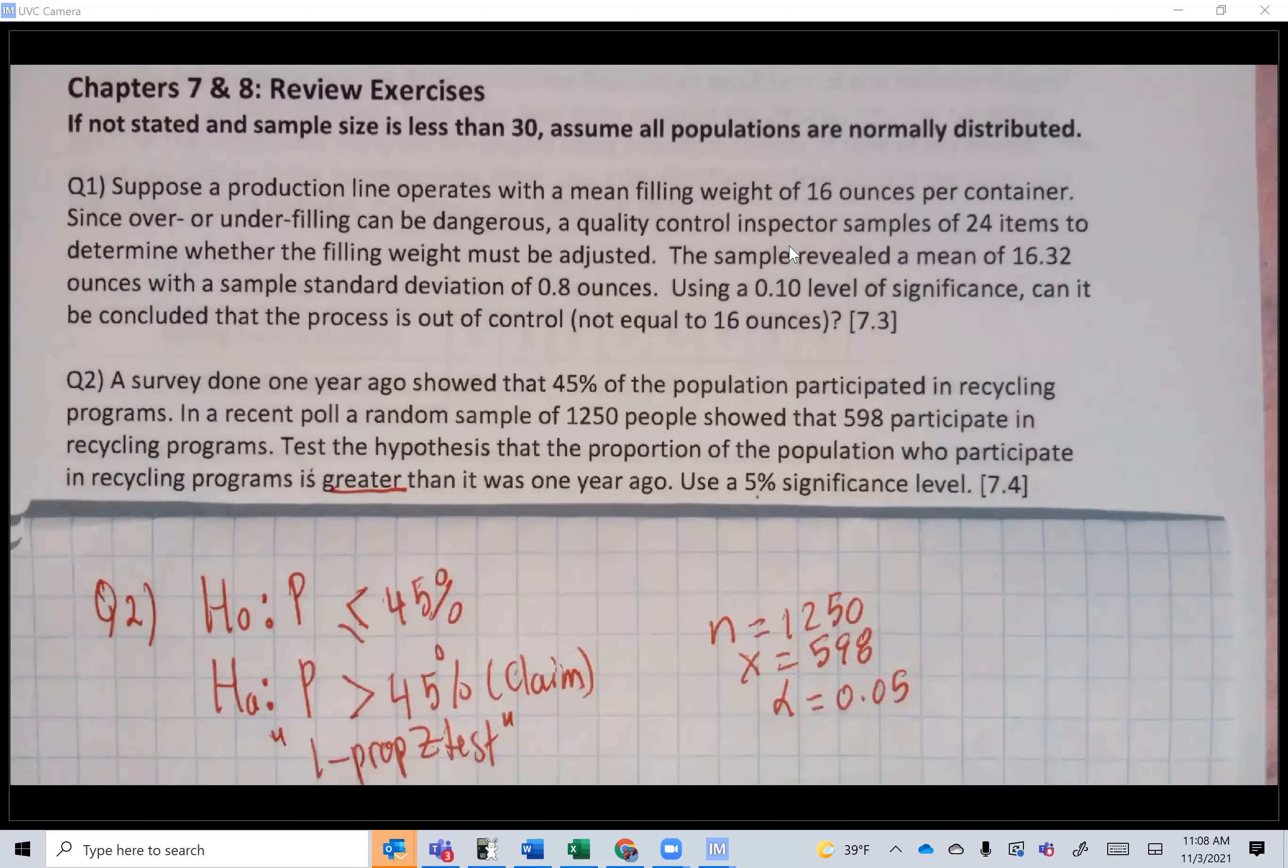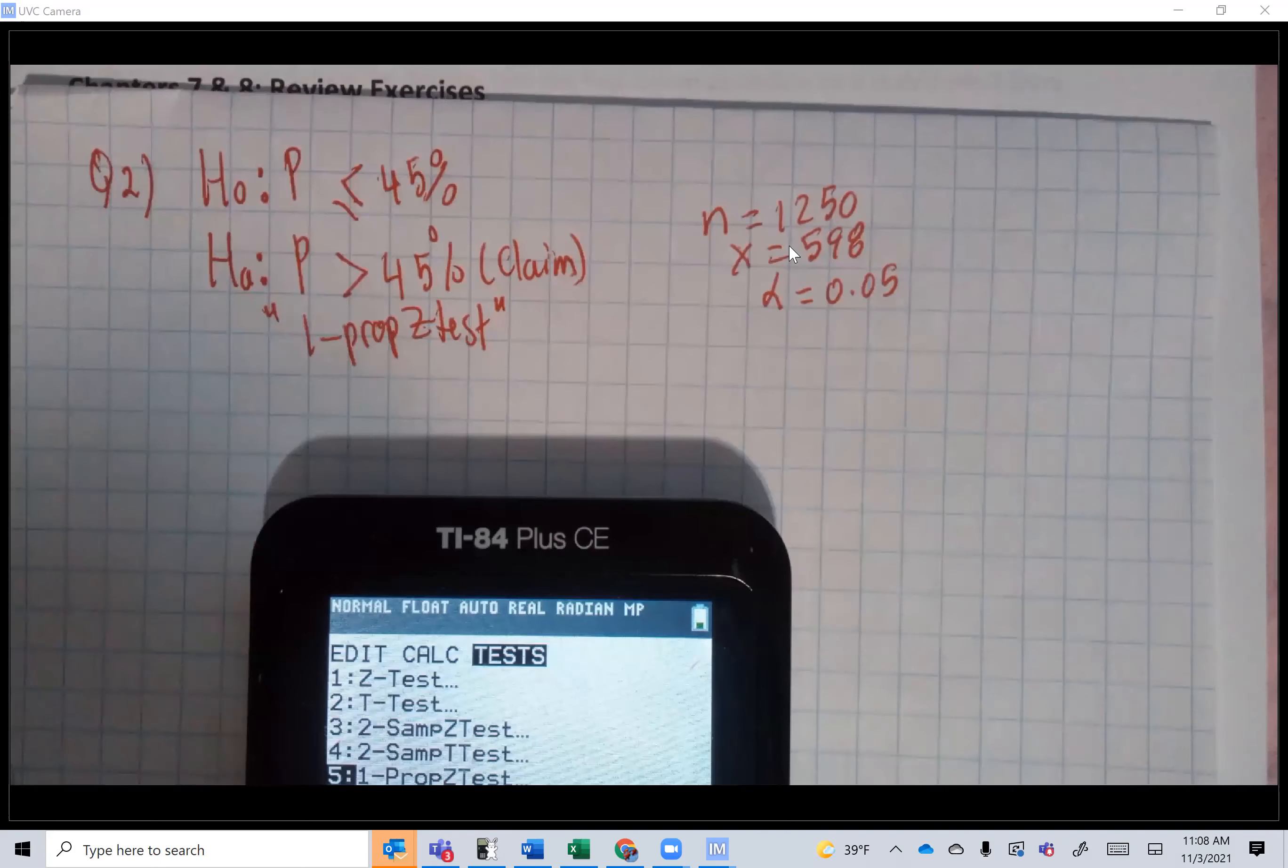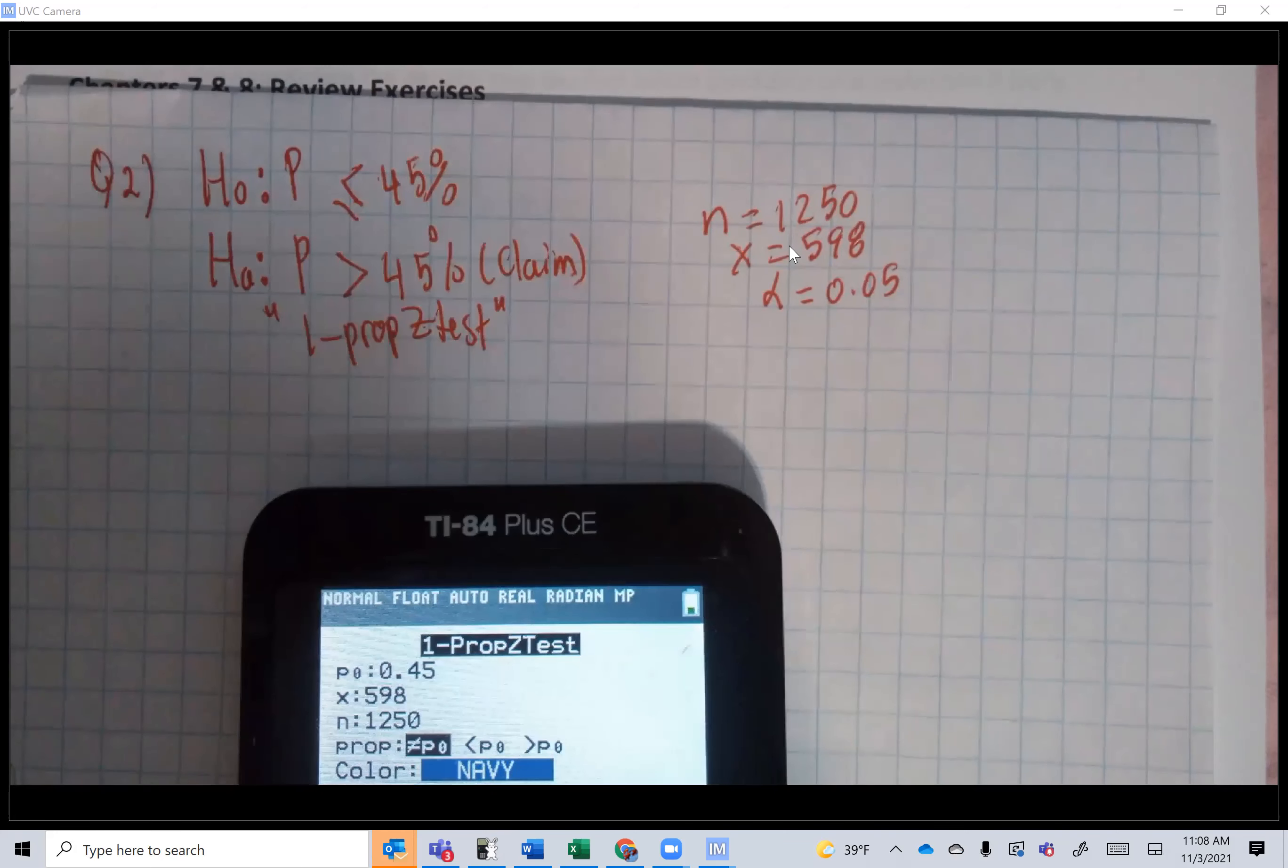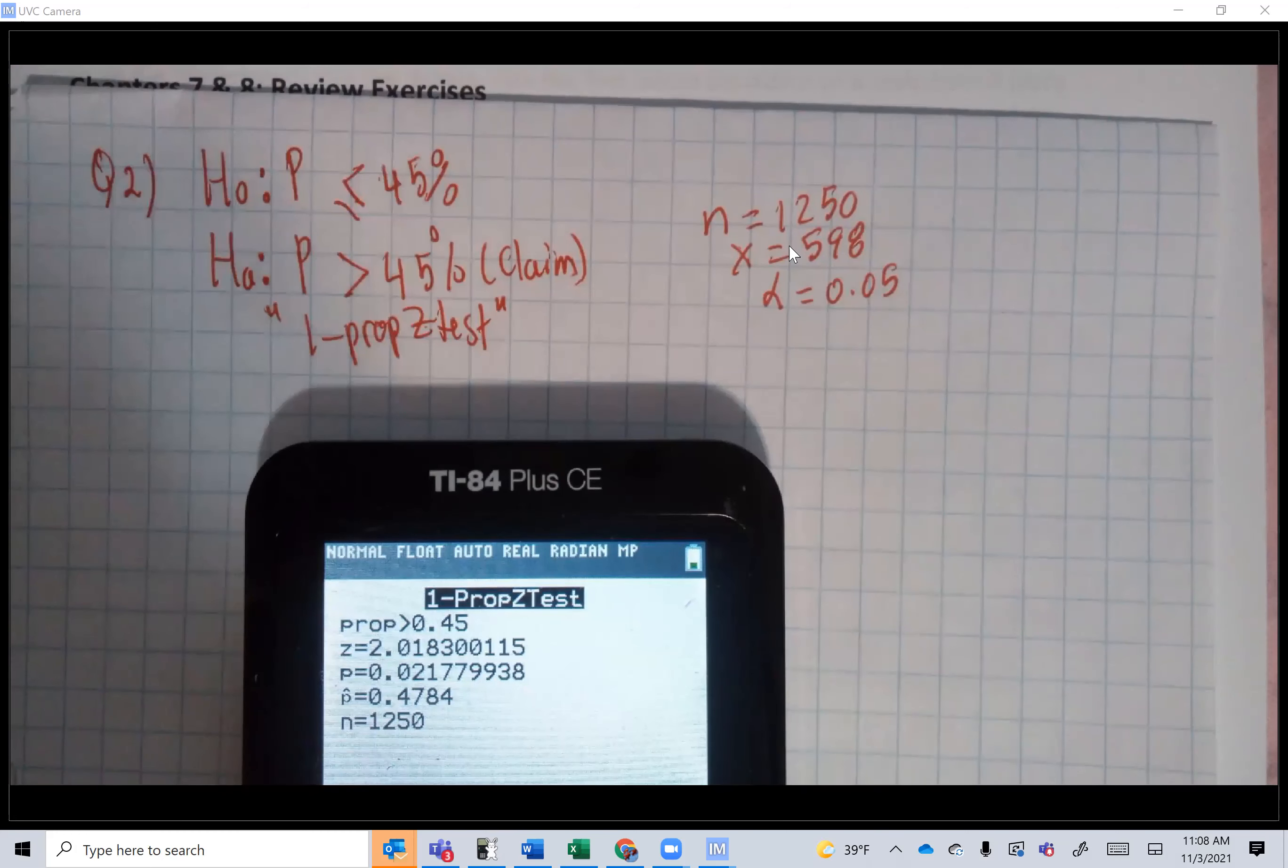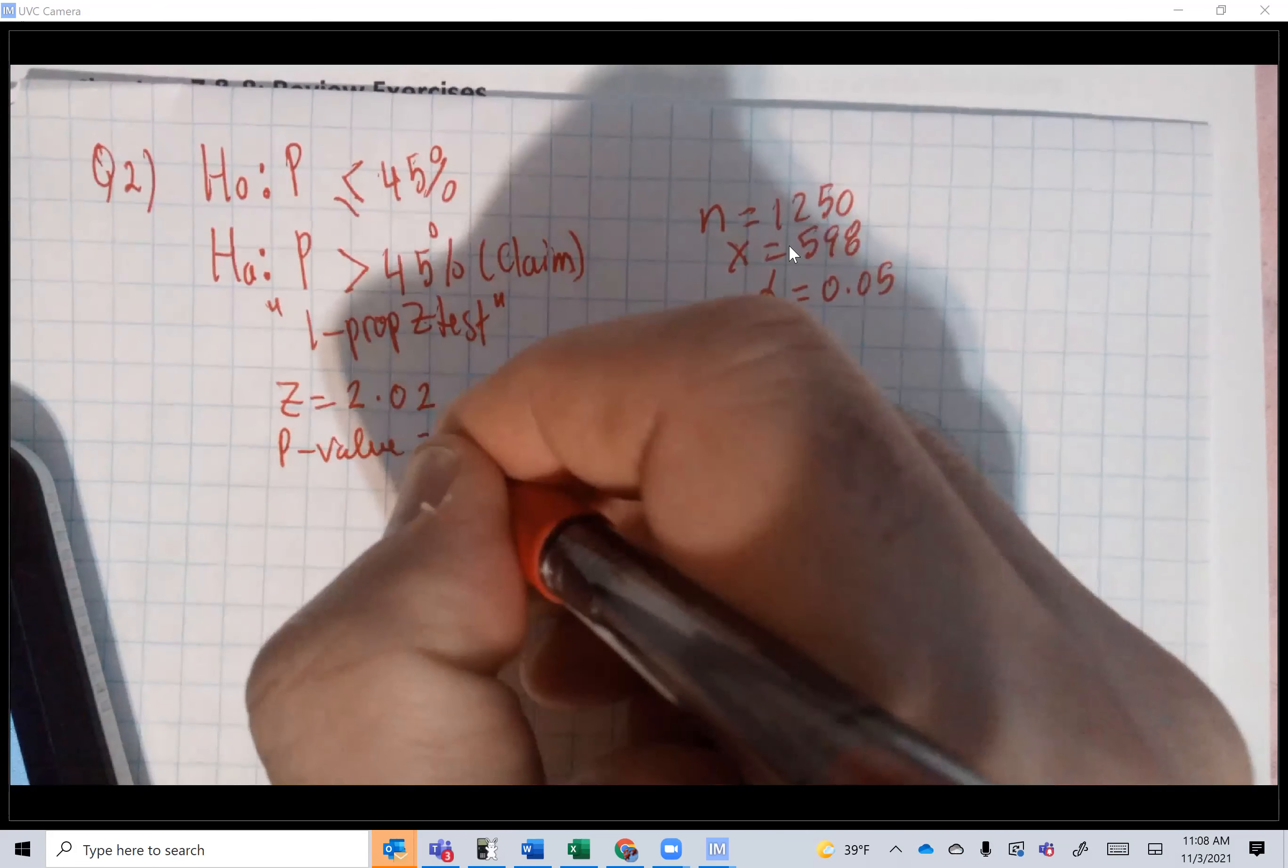Stat, tests. p₀ is 0.45, x is 598, n is 1250. Proportion greater than. We're going to choose greater than. And you get z is 2.018.